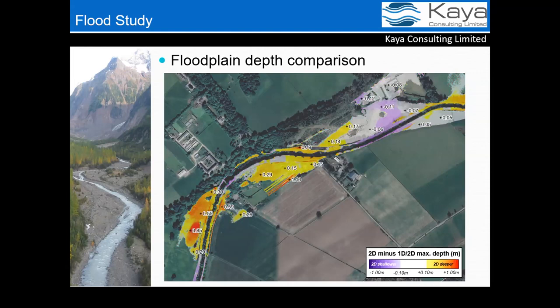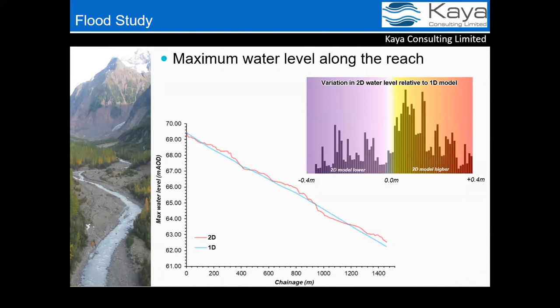Looking at the floodplain depth comparison: purple indicates areas where the 2D-only model is shallower, while orange and red indicate increased flooding in the 2D model. As expected from the extent figure, depths are generally higher across the 2D model — for most of the area the difference is about 0.2 meters, but in one area there is a discrepancy of 0.85 meters in maximum depth.